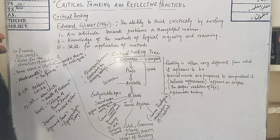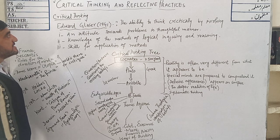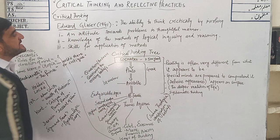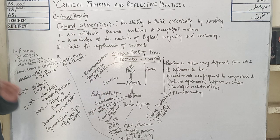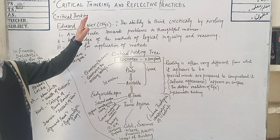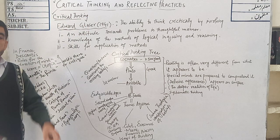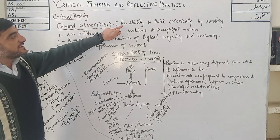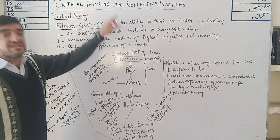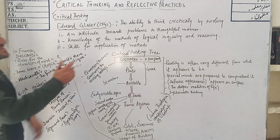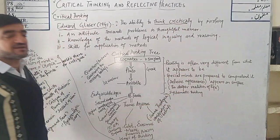This is the title of the course: critical thinking and reflective practices. According to Edward Glasser, 1941 — just imagine that today we are teaching critical thinking in 2024, and Edward Glasser in 1941 had already written a complete book on critical thinking. So from this you can evaluate the quality and standard of our education. He defines critical thinking as the ability — a God-gifted ability — to think critically, meaning thinking that involves logic and reason.